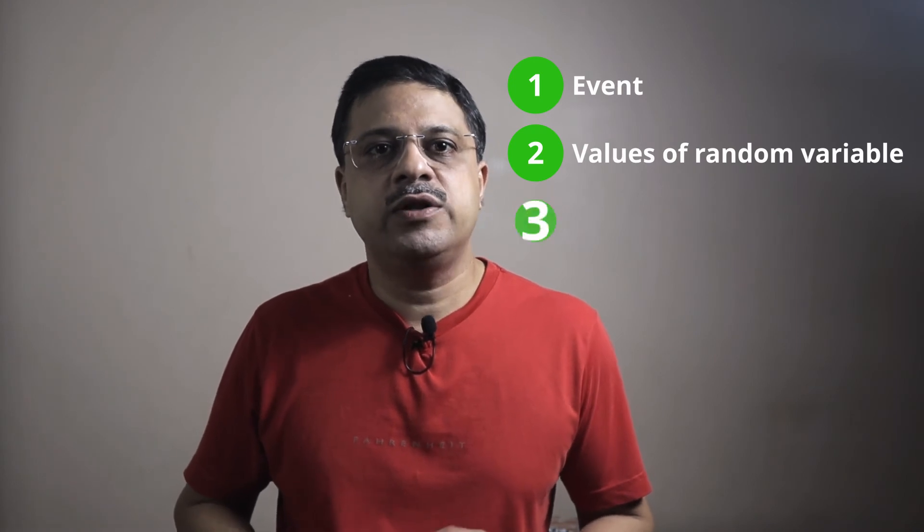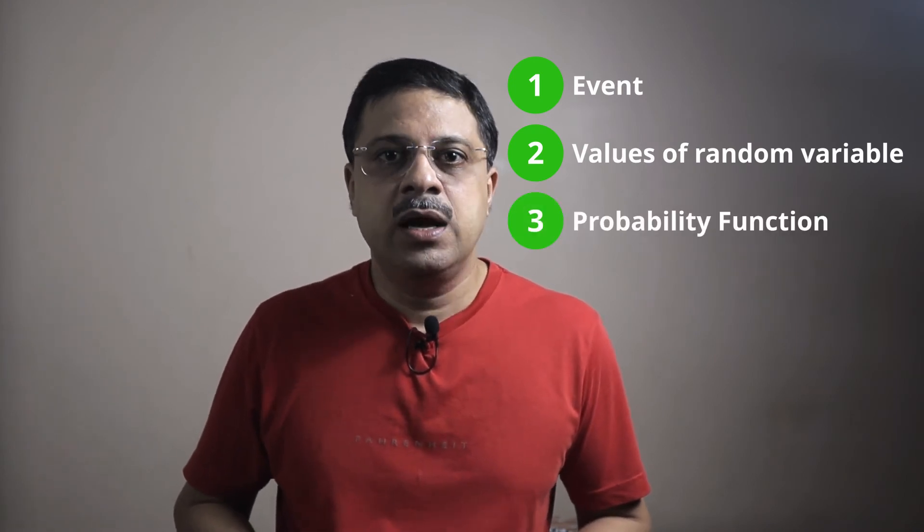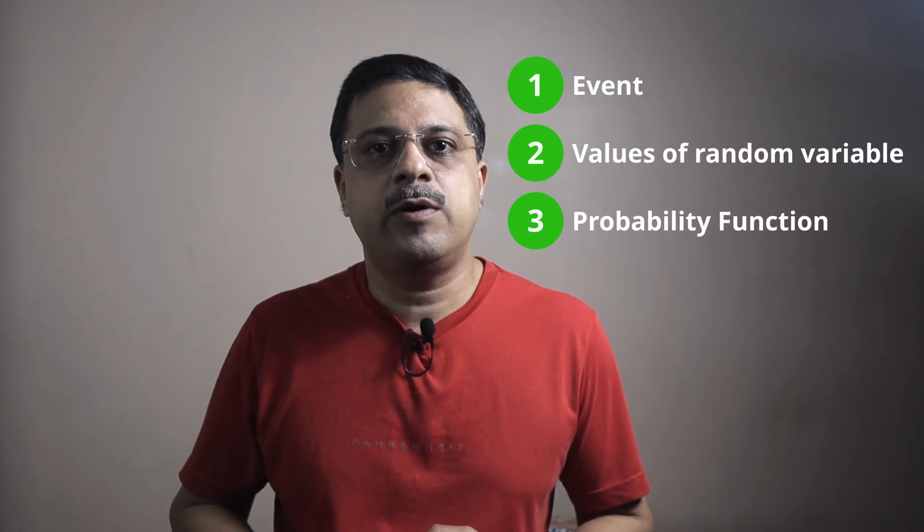It does not matter if the variable has a single value, bucketed values, or a range of values, as long as it satisfies the following three factors: there is an event, there are possible values a random variable for the event can take, and there is a function to describe the probability distribution. You can always plot a probability distribution for almost anything. Simple, isn't it?